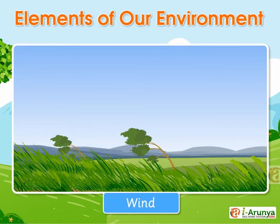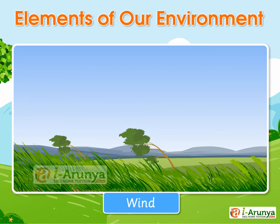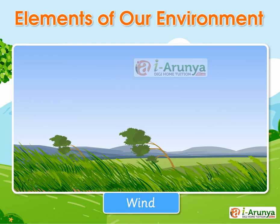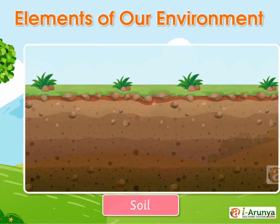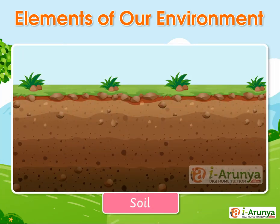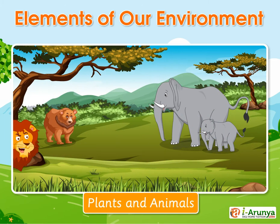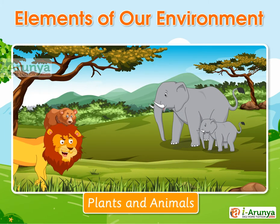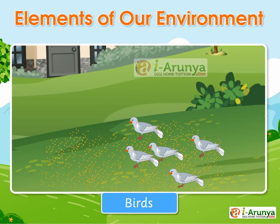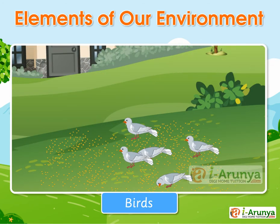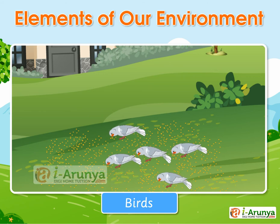You can see here as well — wind is also an element of the environment. Soil, we have talked about soil. Plants and animals. Birds. These are the elements of environment which we can see around us.